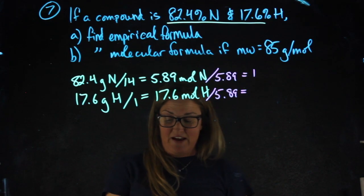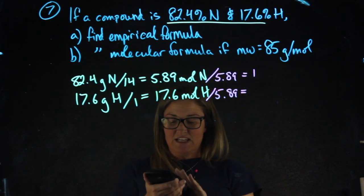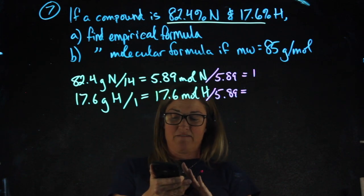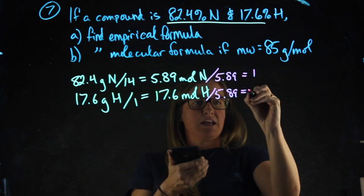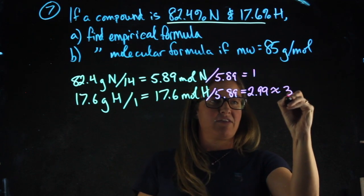5.89 divided by 5.89 is obviously 1. 17.6 divided by 5.89 gives me 2.99, which is basically 3.